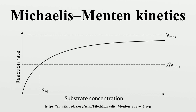Its formula represents the maximum rate achieved by the system at maximum substrate concentrations. The Michaelis constant is the substrate concentration at which the reaction rate is half of maximum. Biochemical reactions involving a single substrate are often assumed to follow Michaelis-Menten kinetics, without regard to the model's underlying assumptions.